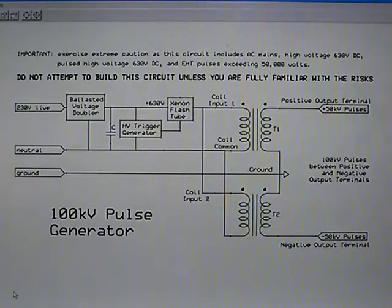So here is the overall circuit. I need to read out the heading here which is important: you should exercise extreme caution with this circuit as it includes AC mains, high voltage 630 volts, pulsed high voltage 630 volts which can remain after the mains is removed and also extra high tension pulses exceeding 50,000 volts. So do not attempt to build this circuit unless you are fully familiar with the risks.